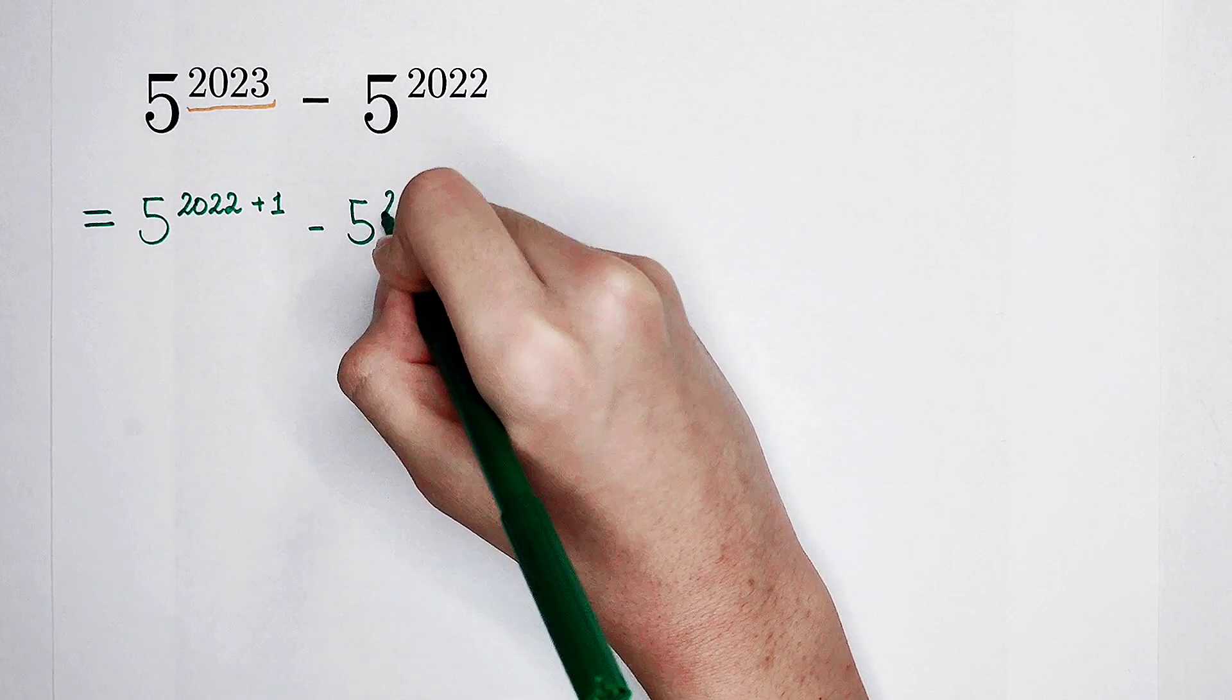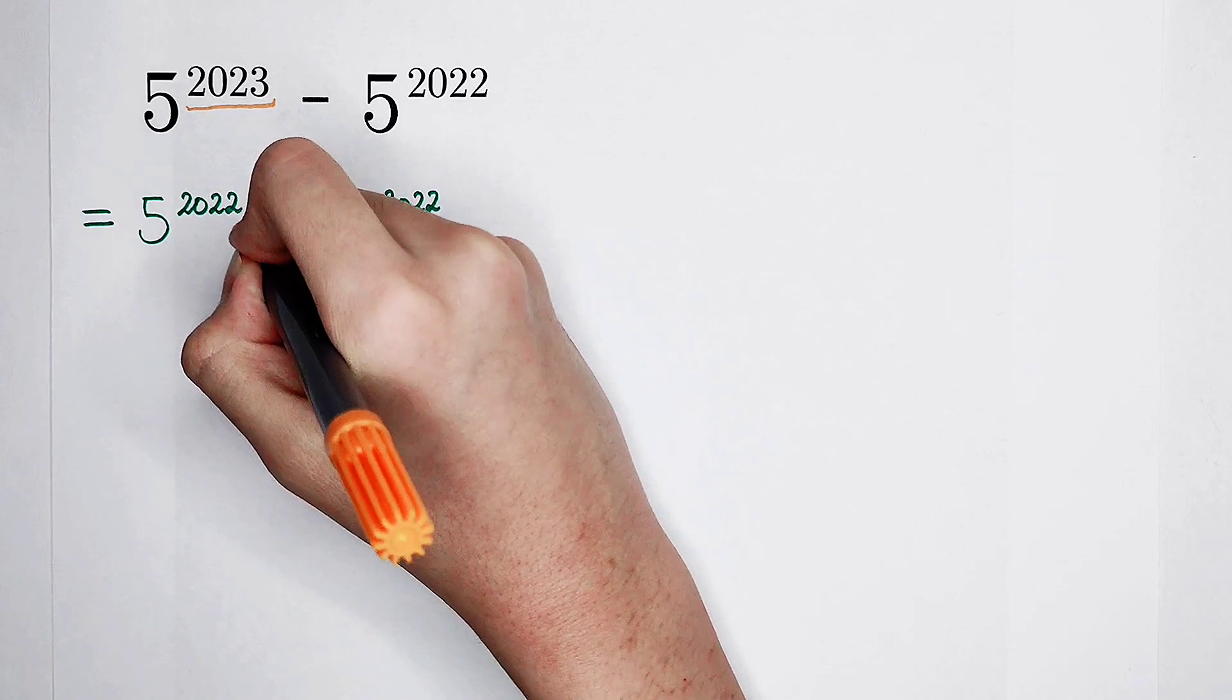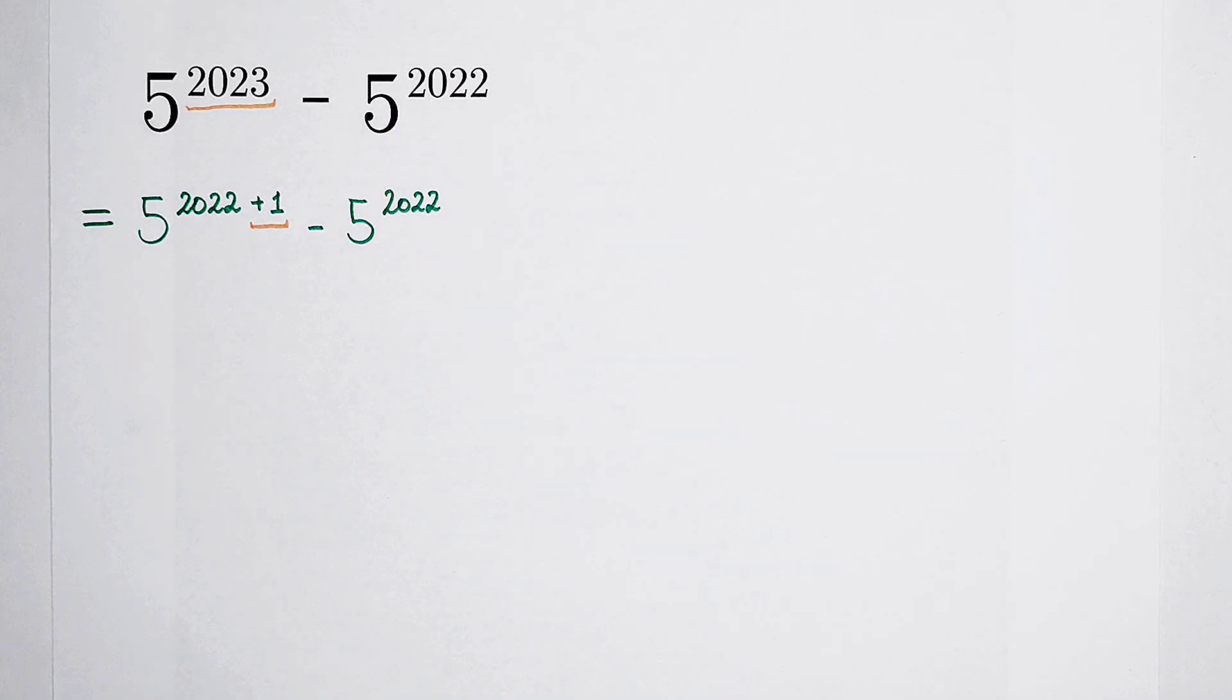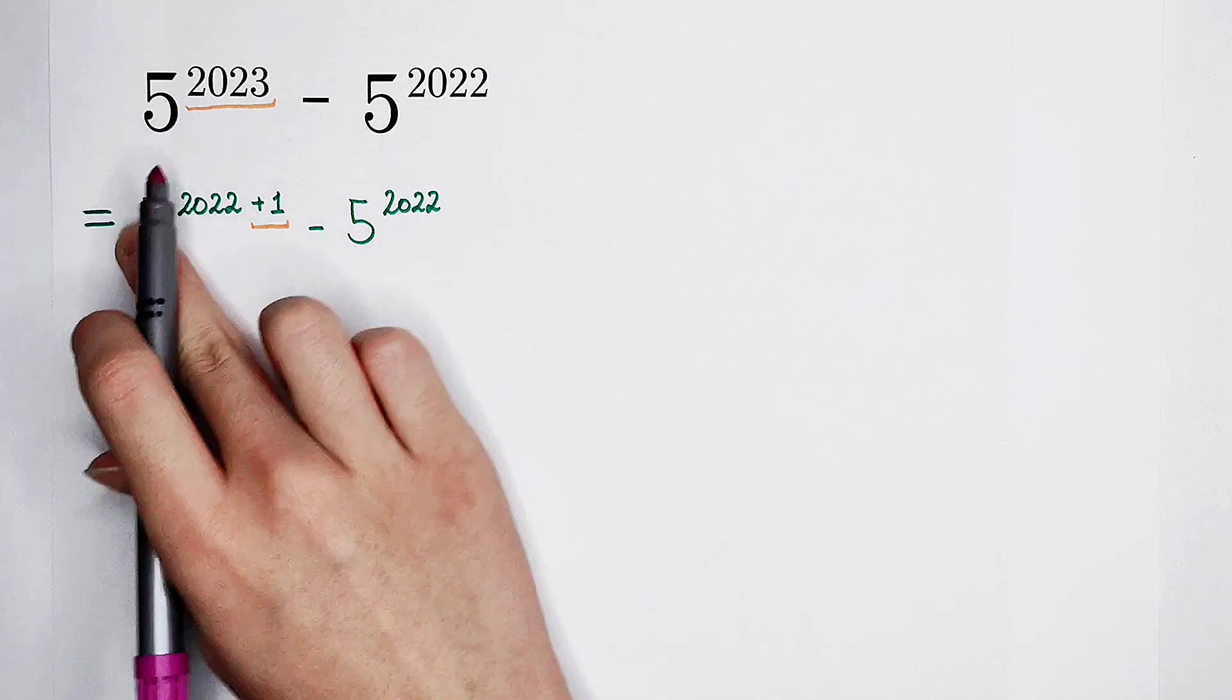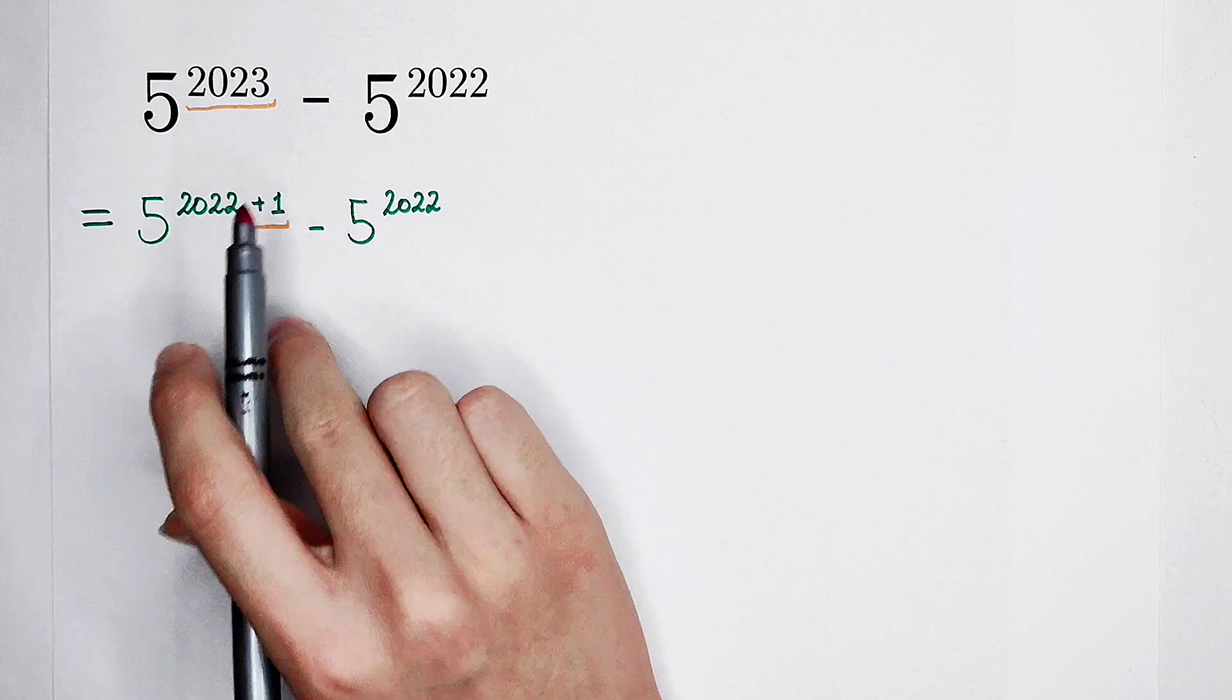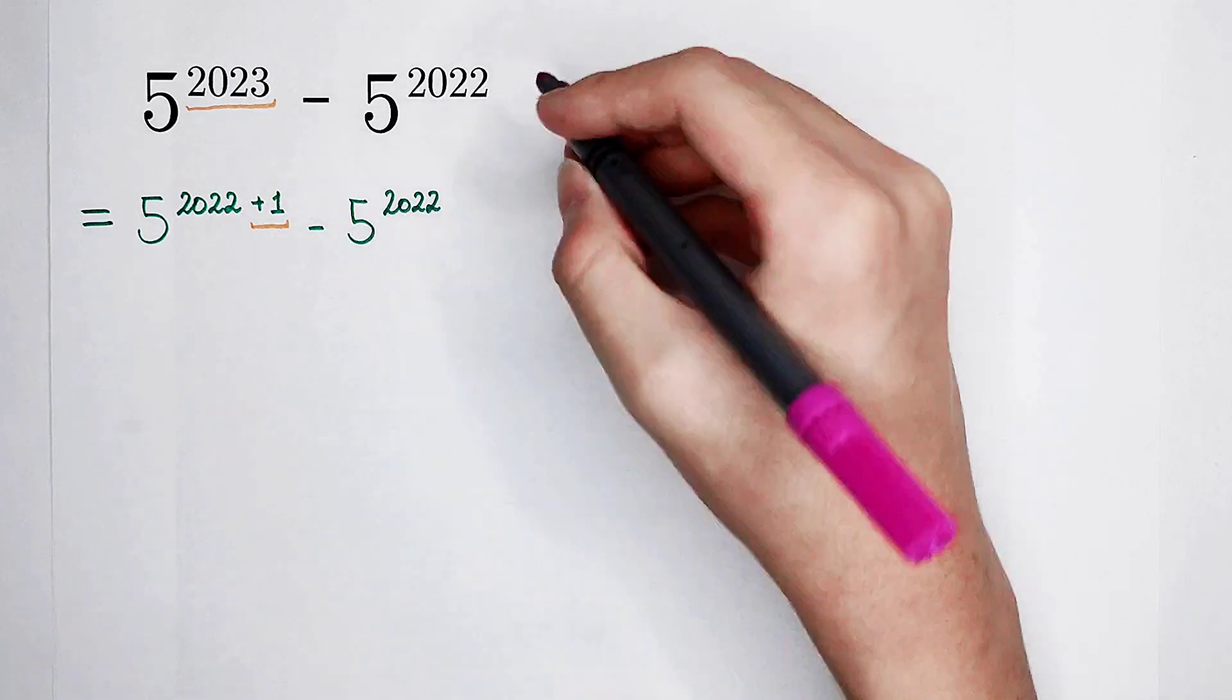Minus 5 to the power of 2022. This plus 1, we don't like it as well. This exponent is in the form of a sum. Now we should use this formula.